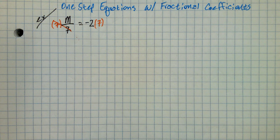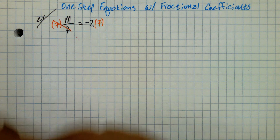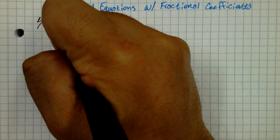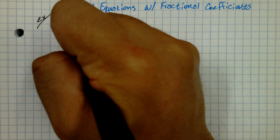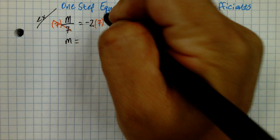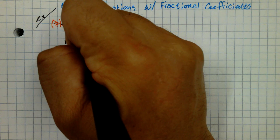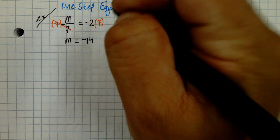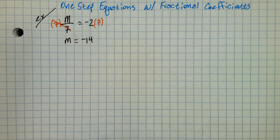So I get an answer. Here, M equals negative 2 times 7, which is negative 14. Easy.